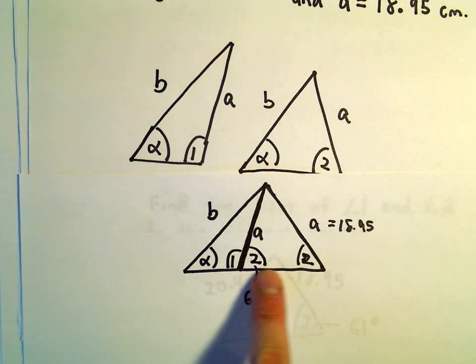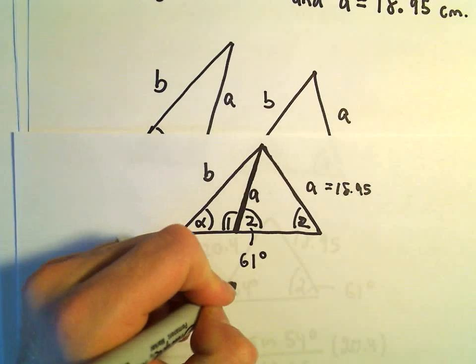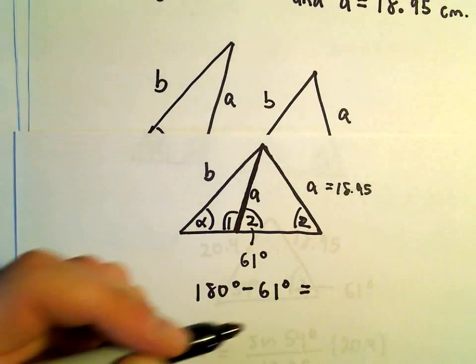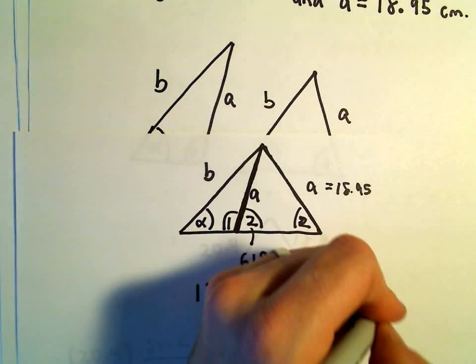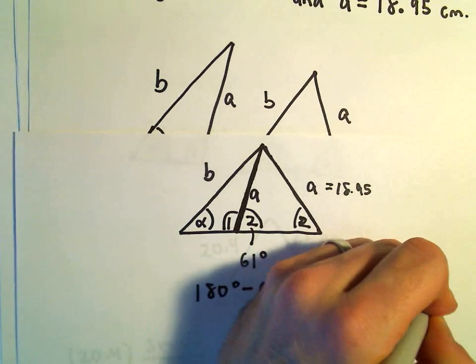Well, if you add up the degrees along a line, we get 180 degrees. So if we simply take 180 degrees and subtract away 61 degrees, we're going to get 119 degrees as the measure of angle 1.